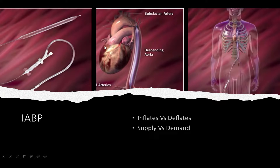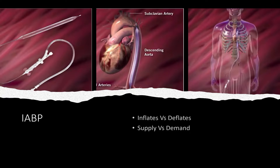By inflating and deflating, it balances the supply and demand of oxygen on the heart. When the heart contracts, it requires the most oxygen — that's when the balloon pump deflates. By deflating, that creates a little bit of a vacuum, almost like a suction effect, taking a little bit of blood out of the heart.